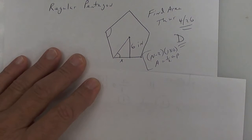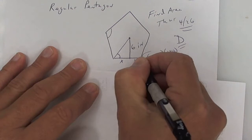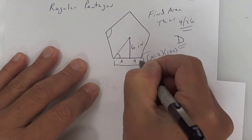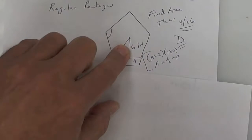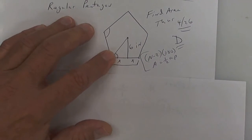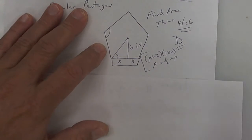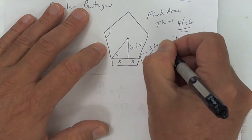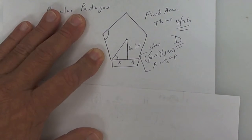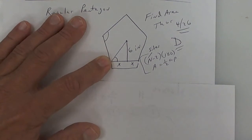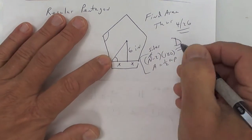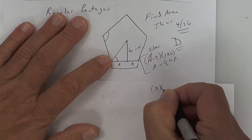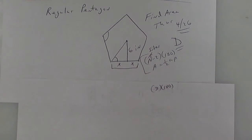What we're going to do is figure out what x is so that we can double x to get the side, because we need the side to get the perimeter. We have the apothem. This thing has five sides, so N represents the number of sides — that is an EOC question. So it's five minus two, which is three times 180, and three times 180 is 540. So all of these angles inside add up to 540 degrees.